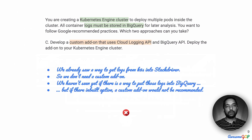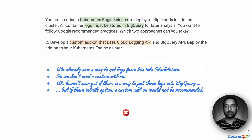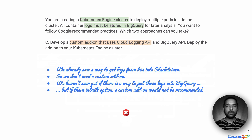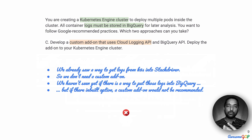How about option C? This suggests that we create a custom add-on using the Cloud Logging API and BigQuery API and deploy this to your Kubernetes engine cluster. We can readily eliminate that because we already know there is an inbuilt, ready-made solution within Kubernetes Engine to get logs. We don't need a custom add-on, so option C can be eliminated. Ideally, we would like a simpler option than writing custom add-ons that combine Cloud Logging and BigQuery.